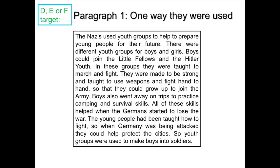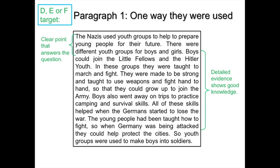This is a D, E and F target grade answer. Paragraph one: the Nazis used youth groups to help prepare young people for their future. There were different youth groups for boys and girls — boys could join the Little Fellows and the Hitler Youth, where they were taught to march and fight, made strong, and taught to use weapons and hand-to-hand combat so they could grow up and join the army. Boys also went on trips to practice camping and survival skills. All of these skills helped when the Germans started to lose the war, as young people had to help protect the cities. There is a clear point, backed up with good detailed knowledge, good understanding of youth groups, and an attempt to link back to the question.